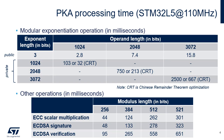Here are the modular exponentiation processing times using different exponent and operand sizes. Other important operations, like ECC scalar multiplication and ECDSA signature and verification, are also mentioned. Values are computed on an STM32L5 for a PKA clock of 110 MHz.